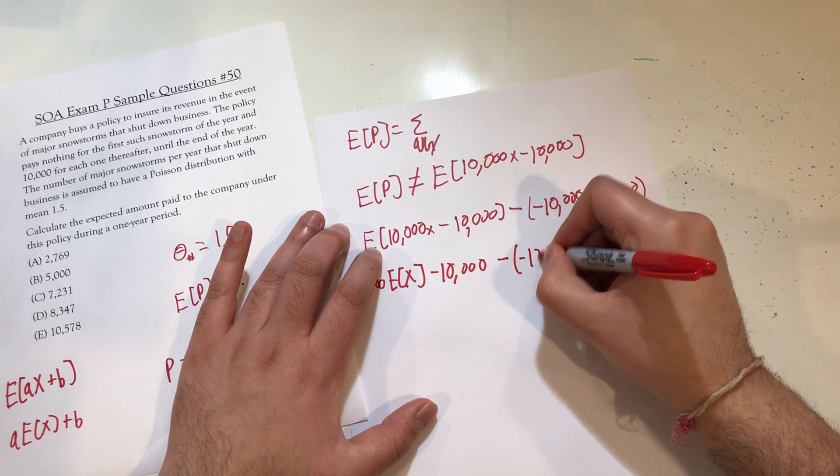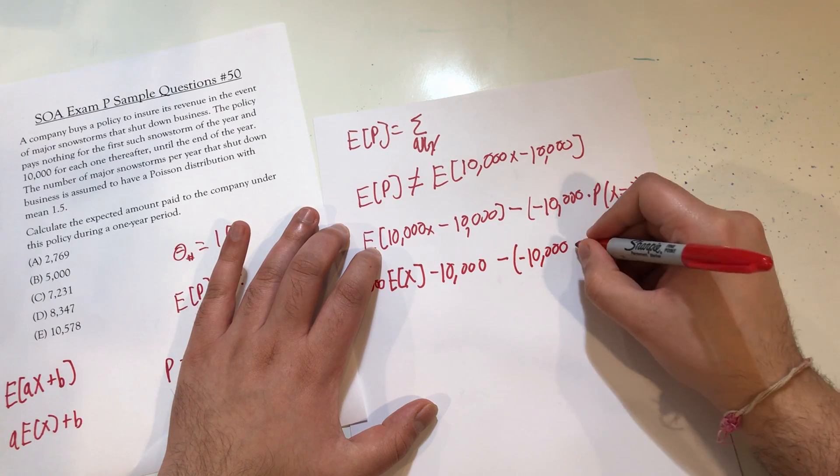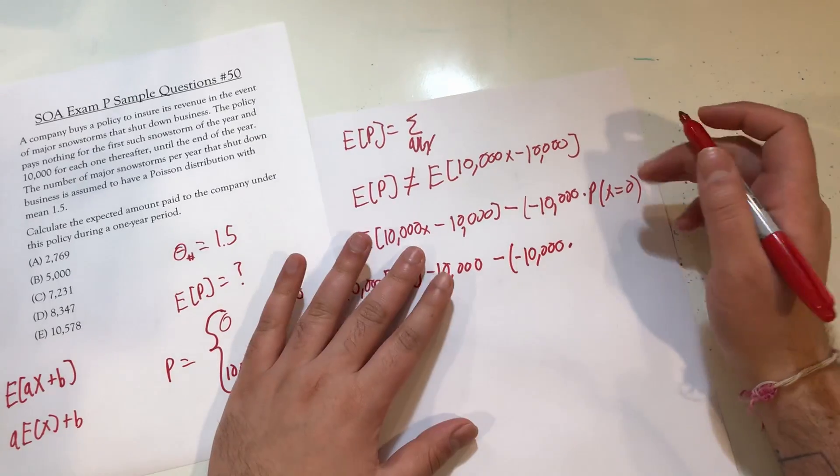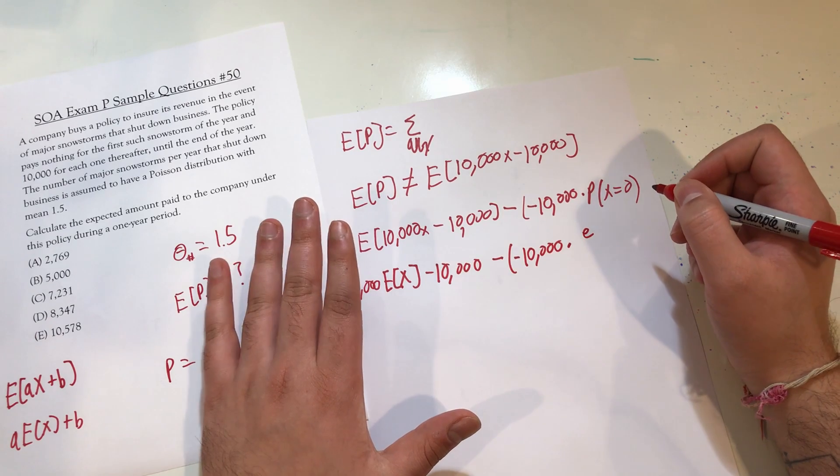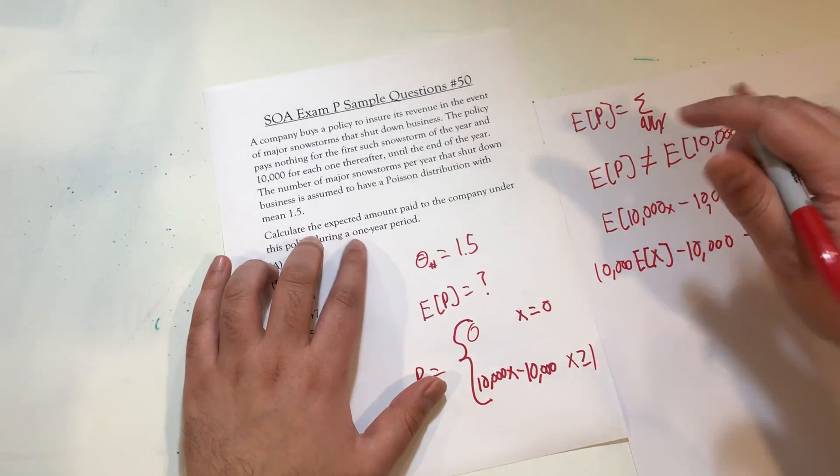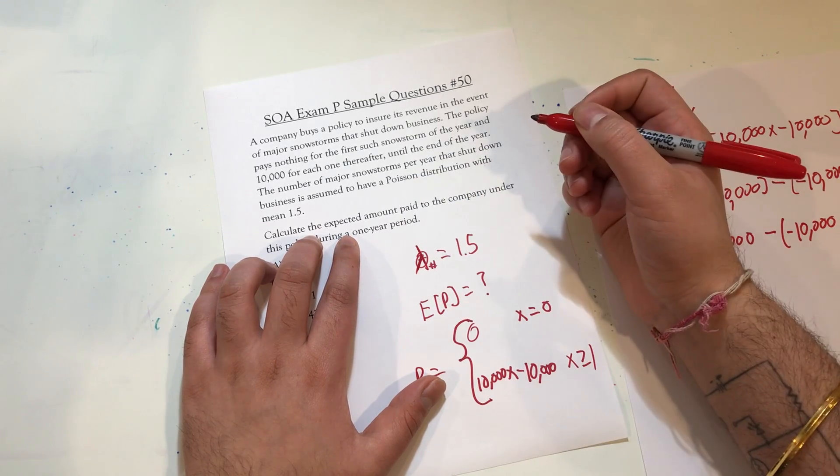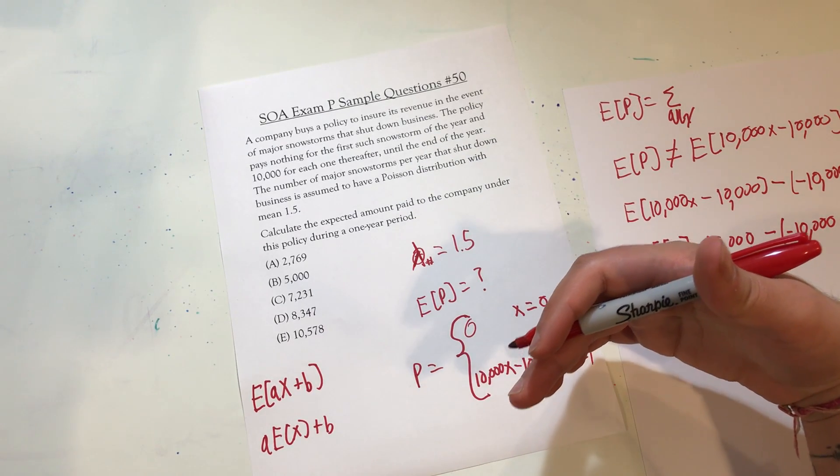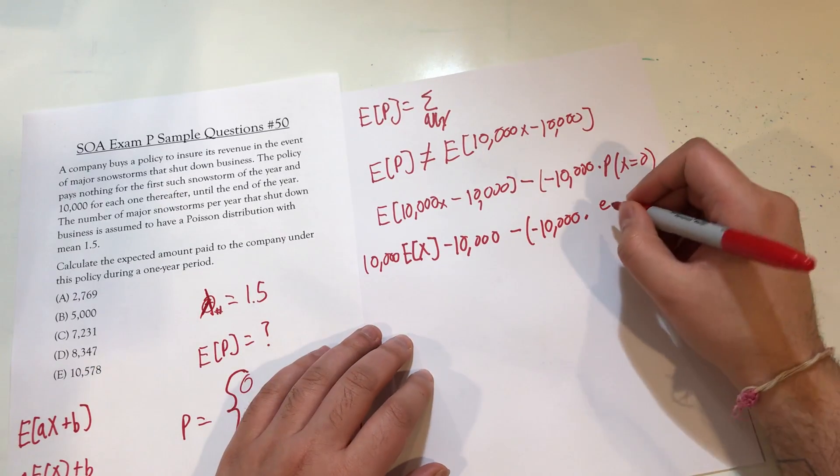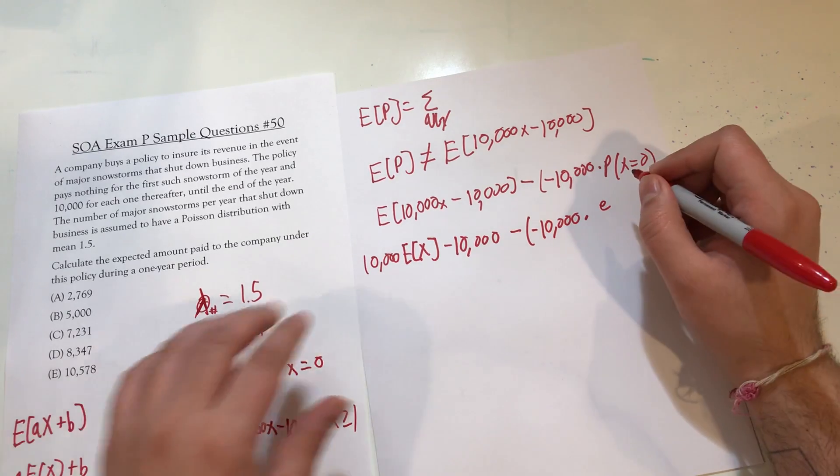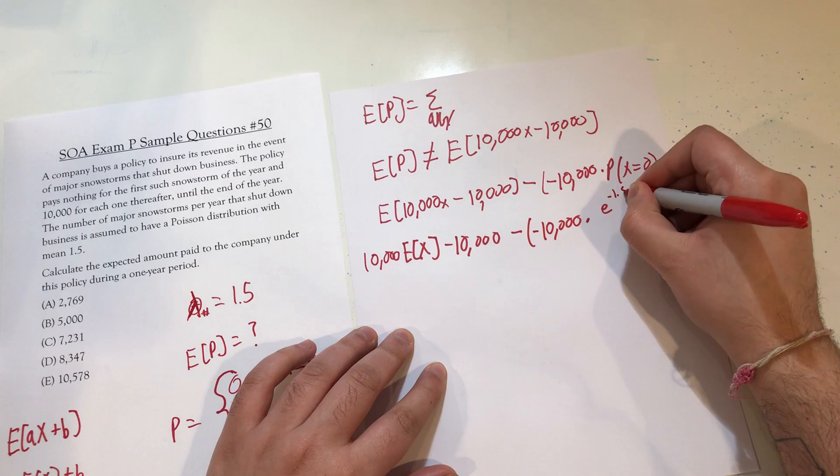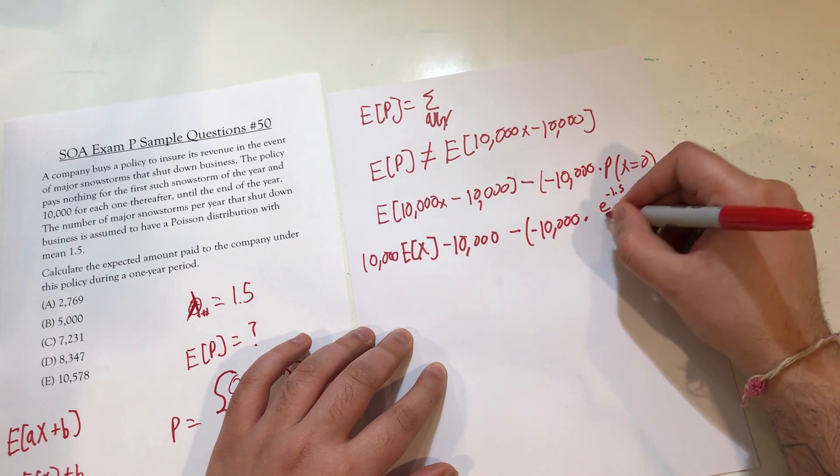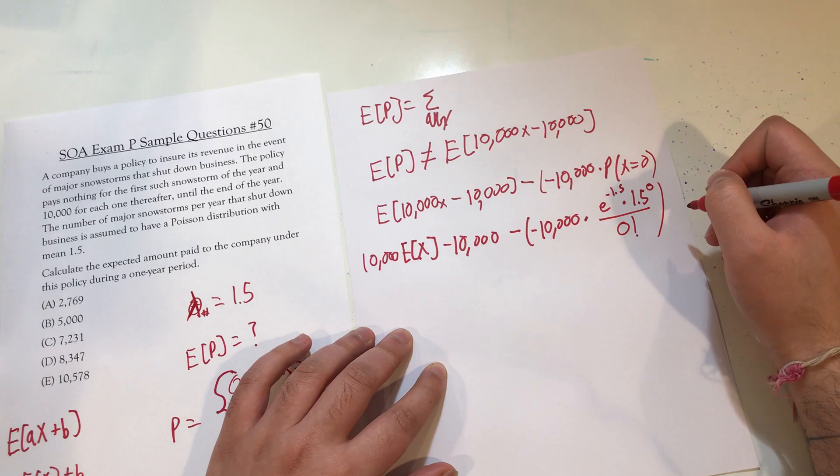We subtract away negative 10,000 multiplied by the probability that x equals zero. It's a Poisson distribution, so it's e to the negative lambda. Oh, I just realized I wrote theta here. It should be lambda. Lambda equals 1.5. Theta is actually the parameter I typically use for an exponential distribution, which is one of the continuous distributions. So it's e to the negative lambda. In this case, your lambda is negative 1.5 times lambda which is 1.5 to the x which is zero, over x which is zero factorial.